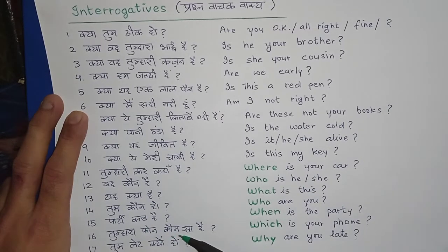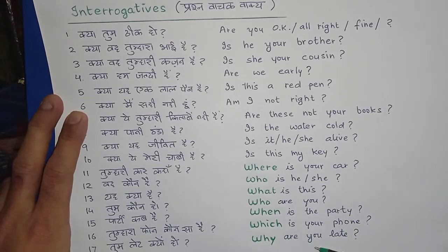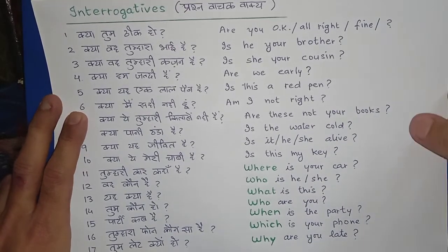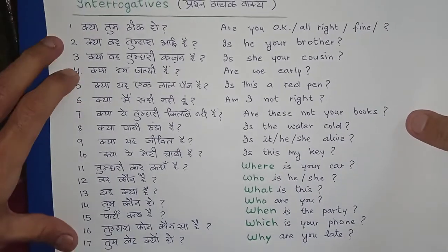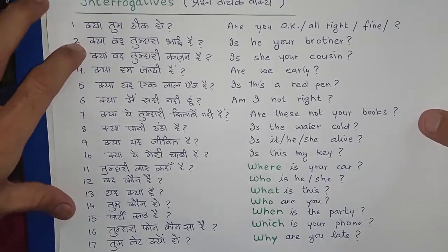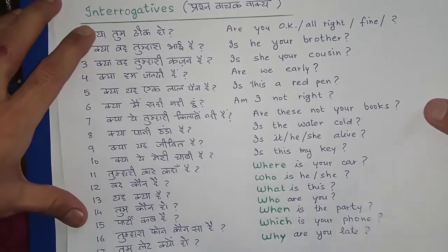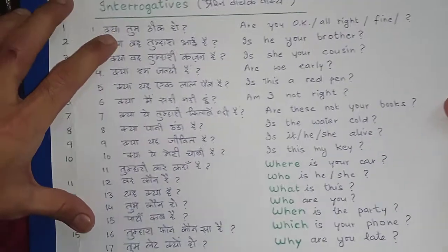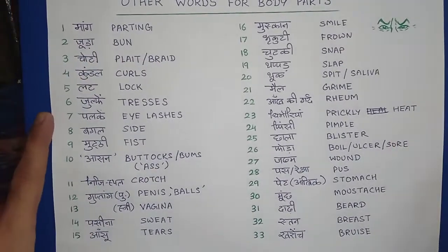Tumhara phone kaun sa hai? — Which is your phone? Tum late kyun ho? — Why are you late? Isi tarah se practice kariye — practice bahut zaroori hai. This is the way we shall go on — vocabulary plus grammar dono cheezein lekar chalenge, isliye bolte hain double speed. So carry on, see you again, bye bye!